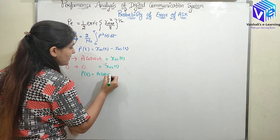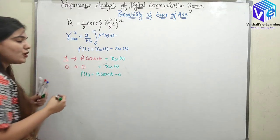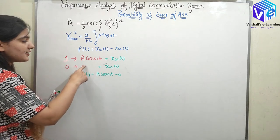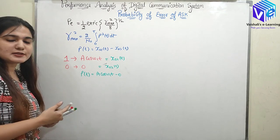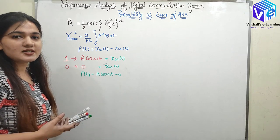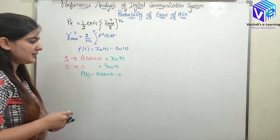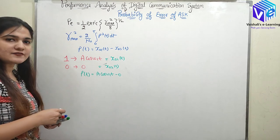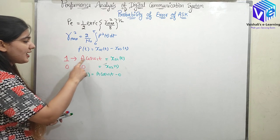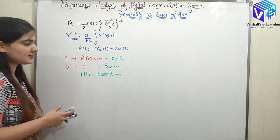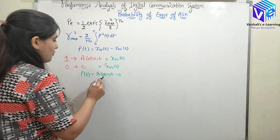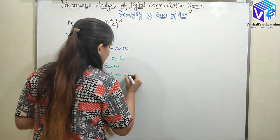Now I can find out p(t). p(t) = A·cos(ωc·t) − 0. I have already discussed ASK and how we can represent 1 and 0 in ASK in my previous video. You can go to that video and watch how 1 is represented as A·cos(ωc·t) in ASK. So p(t) = A·cos(ωc·t).